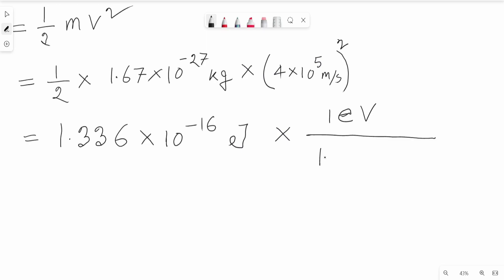equals 1.6 into 10 to the power minus 19 joule. When we divide, the joule units cancel out and we get electron volts. The answer is 835 electron volts, and this completes the solution.